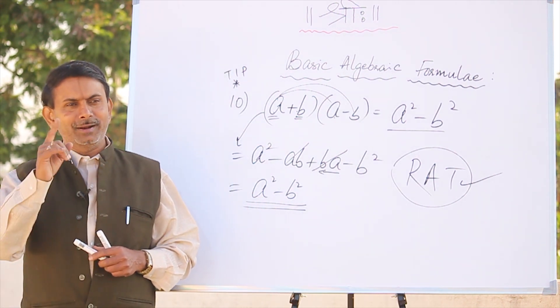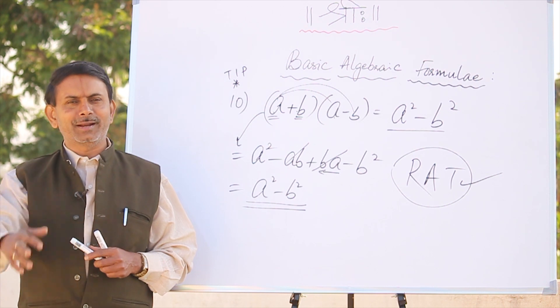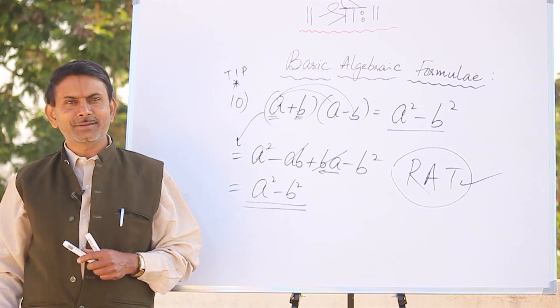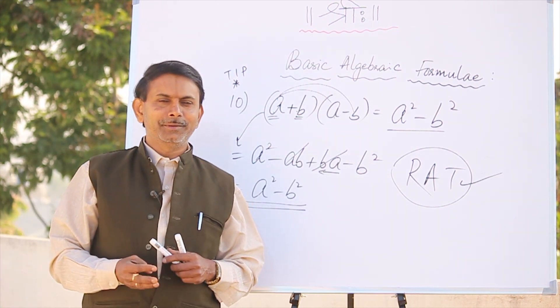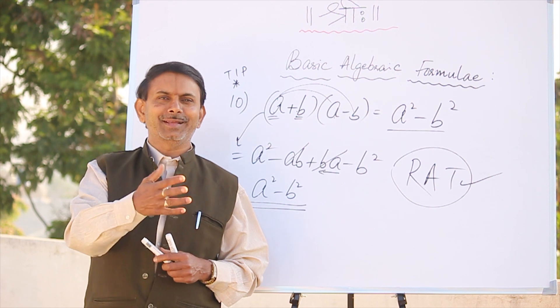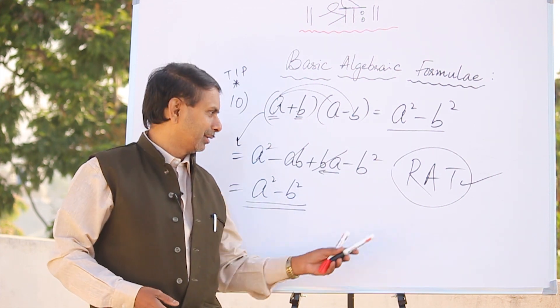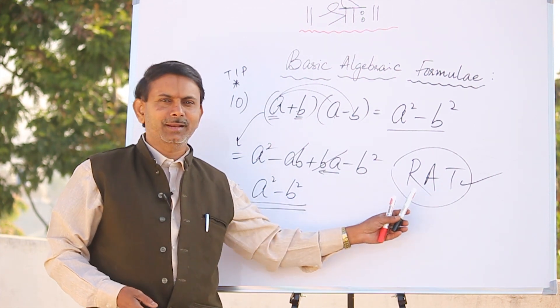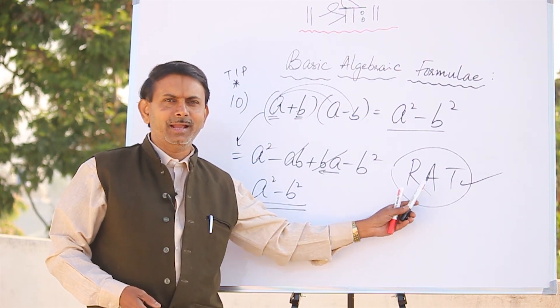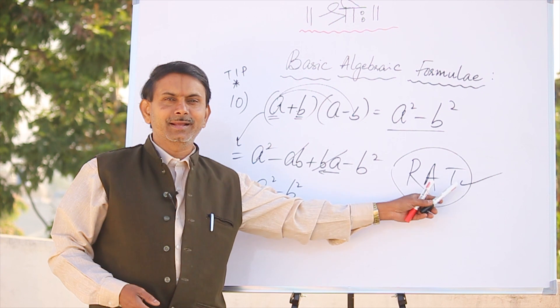Everyone — Ganesha is a big fan, Ganesha is a good idea, Ganesha has a great idea. Your vision is a good idea. This is the RAT — in English, Right Angled Triangle.